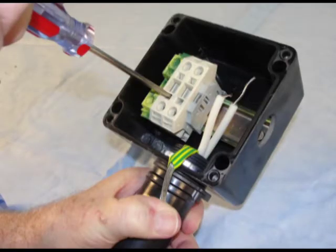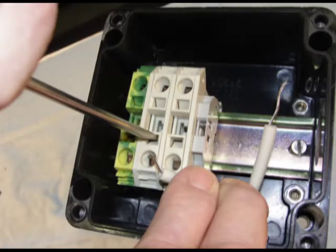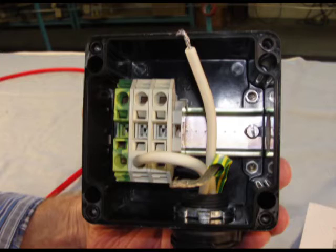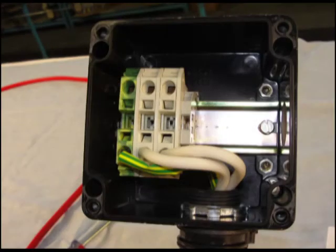This kit uses spring clamp style terminals. To connect wires, firmly insert a slotted screwdriver into the square hole to open the spring. When fully inserted, the screwdriver will lock into place, allowing you to remove your hand and insert the wire into the round hole. Remove the screwdriver to clamp the wire. The wire is held securely against the bust bar. Repeat this process for all connections.